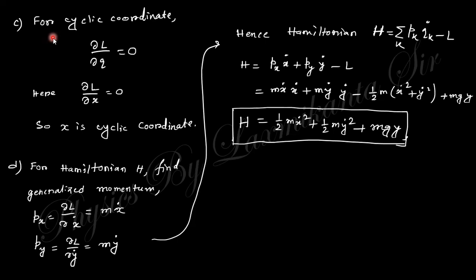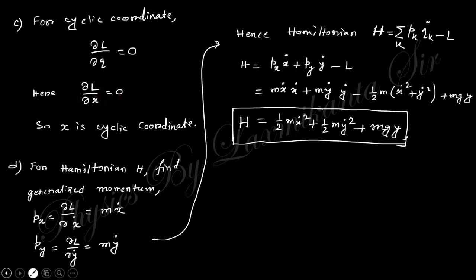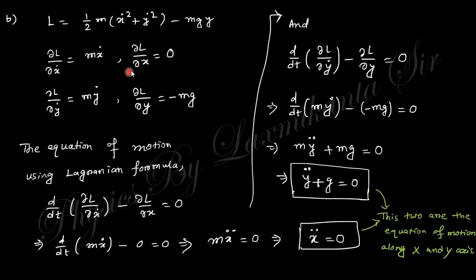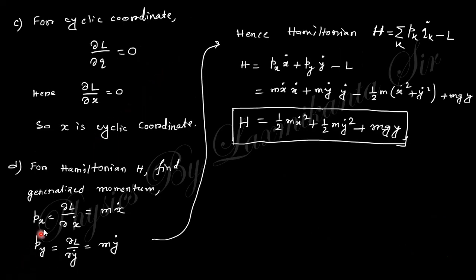For the cyclic coordinate: a coordinate q is cyclic if ∂L/∂q = 0. Here ∂L/∂x = 0, so x is the cyclic coordinate.